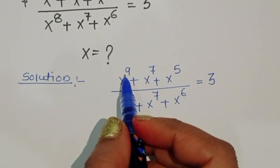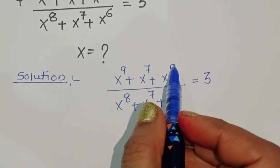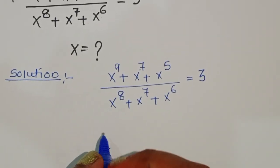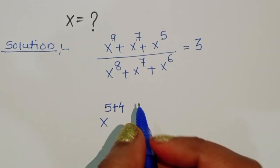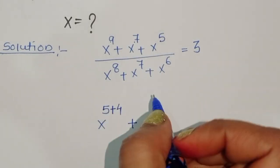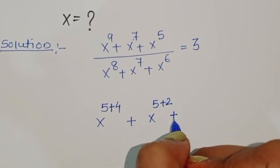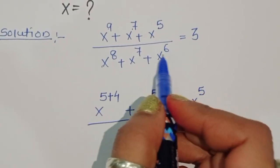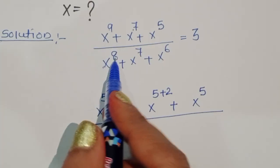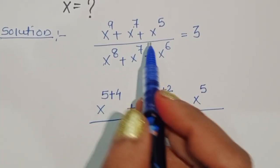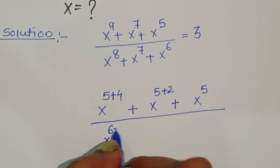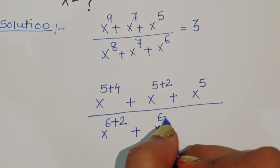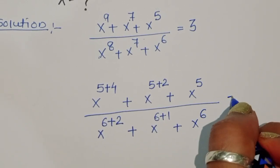We can convert the exponents using the lowest power. In the numerator the lowest power is 5, so: 5 plus 4 is 9, and 5 plus 2 is 7. In the denominator the lowest power is 6, so: 6 plus 2 is 8, and 6 plus 1 is 7. So we rewrite: x power 5+4 plus x power 5+2 plus x power 5, divided by x power 6+2 plus x power 6+1 plus x power 6, equals 3.